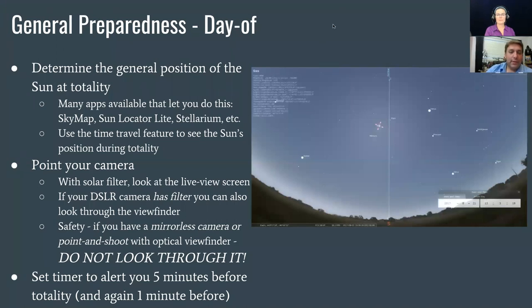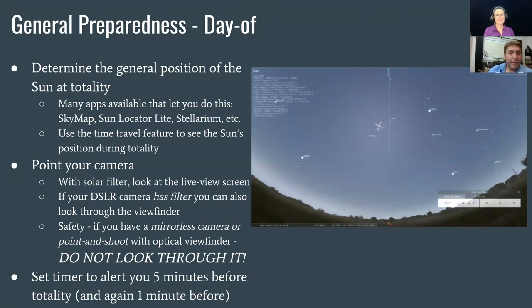One of the things you'll want to do is get a sense of where the sun is going to be from the site you're observing. You can do that with any number of desktop applications or mobile apps. My personal favorite is Stellarium on my laptop — it's easy to use, full of features, and has the eclipse timing really down. You can put in your location and the time of the eclipse to check where the sun will be.